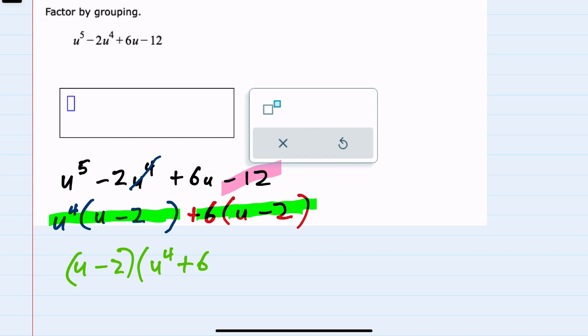So in effect, I have factored out the greatest common factor from the first two and the second two, and then I was left with another greatest common factor—the u minus 2—that I could factor out once again.